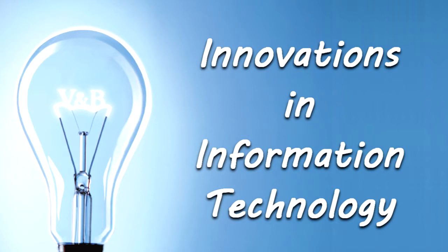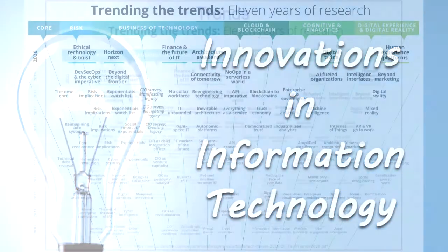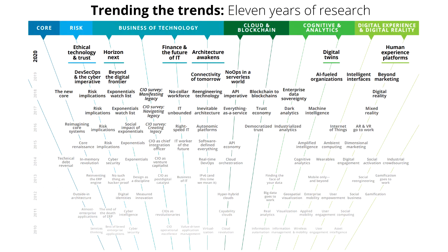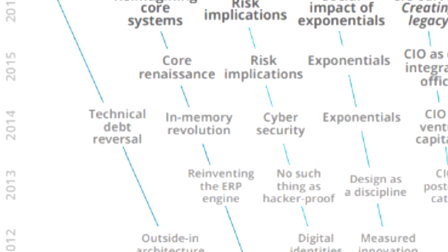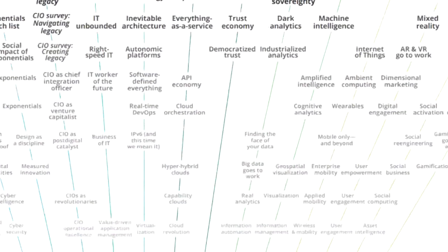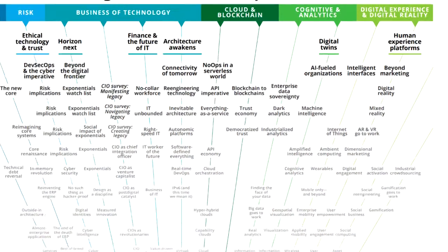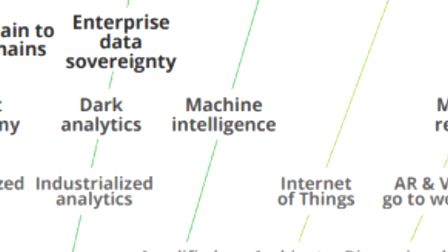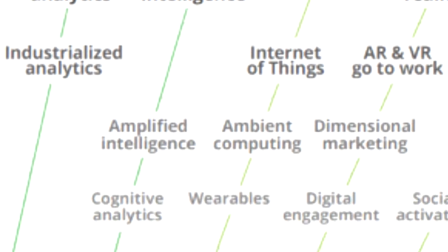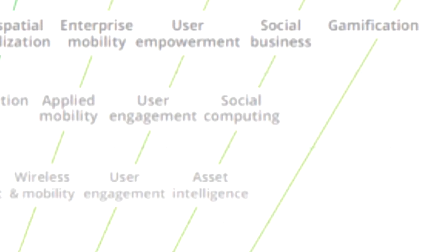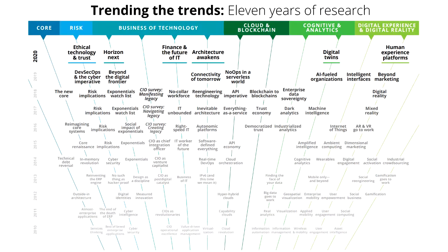When you talk about recent trends, recent innovations, recent areas of research, people normally talk about cyber security. They say big data. And then if you ask them further, they will say machine intelligence or machine learning. And then they also say social media, social business, social re-engineering, social computing and so on and so forth. This is what people normally talk about.